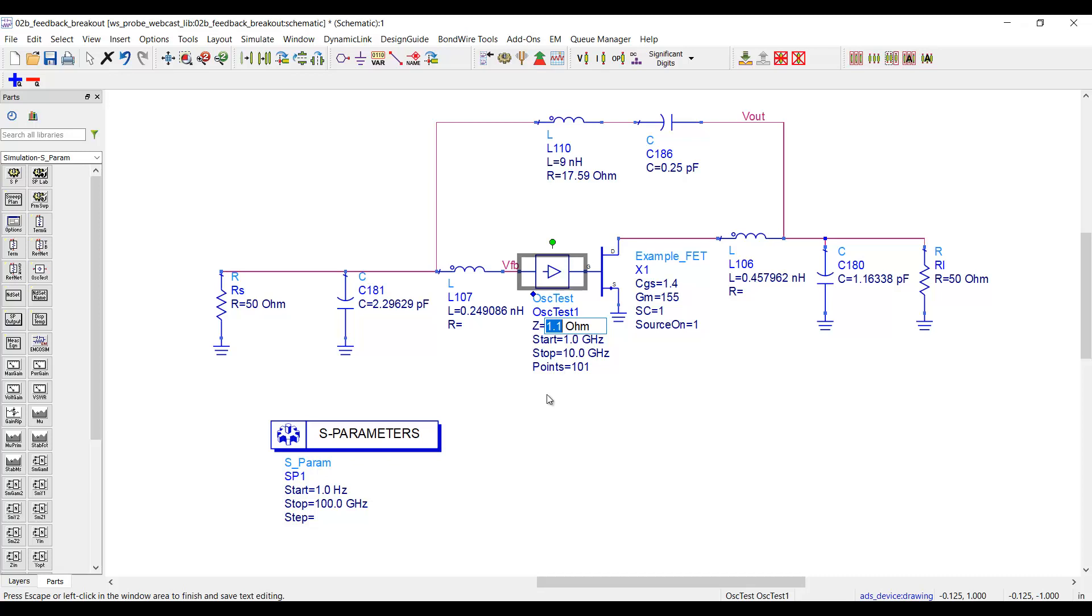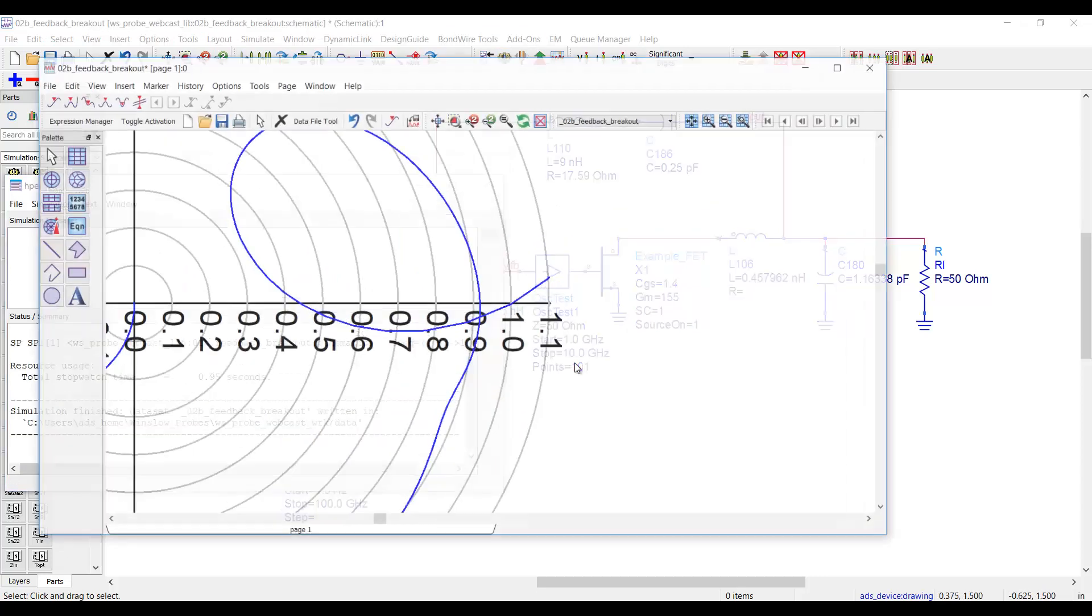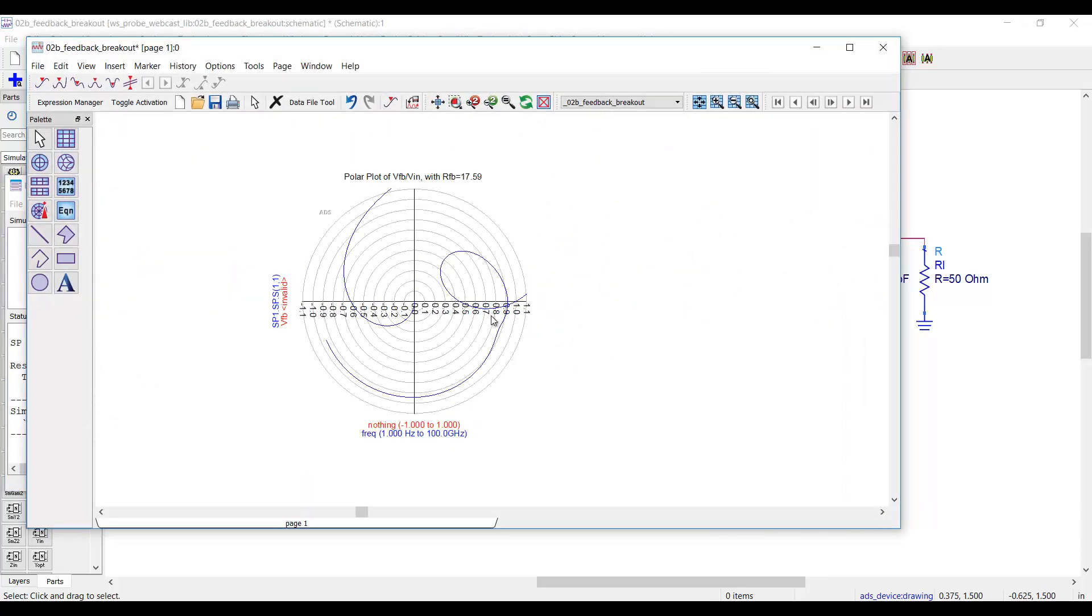Maybe once it made sense in some oscillator application, but it probably does not apply very well to this exact case. So the fact of the matter is this 1.1 ohm value is definitely not the termination that the loop sees when it's closed. If we change the location of the component, or also we could change the value of the termination, you can see that the results will actually be different.